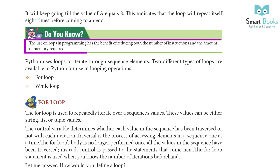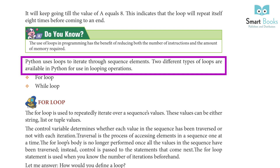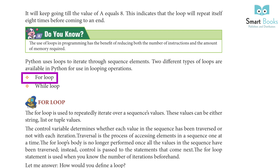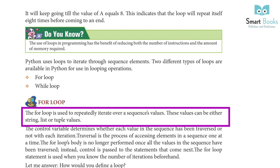The use of loops in programming has the benefit of reducing both the number of instructions and the amount of memory required. Python uses loops to iterate through sequence elements. Two different types of loops are available in Python: the for loop and the while loop.